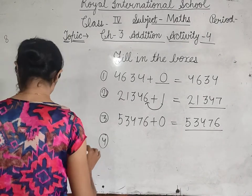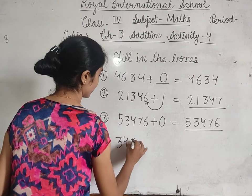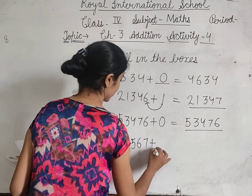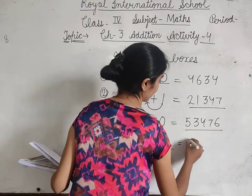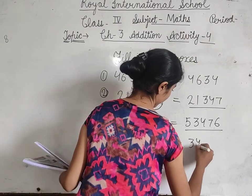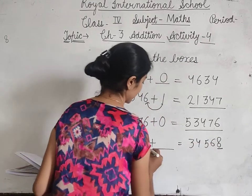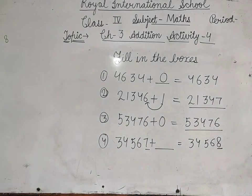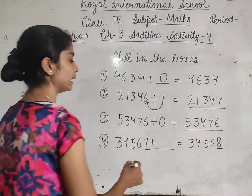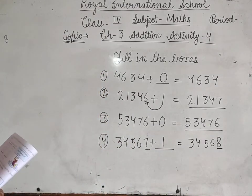Then fourth: 34,567 plus dash equals 34,568. तो देखो successor आएगा — answer में एक ज्यादा है, तो हमने क्या add किया होगा? 1. So the missing number is 1.